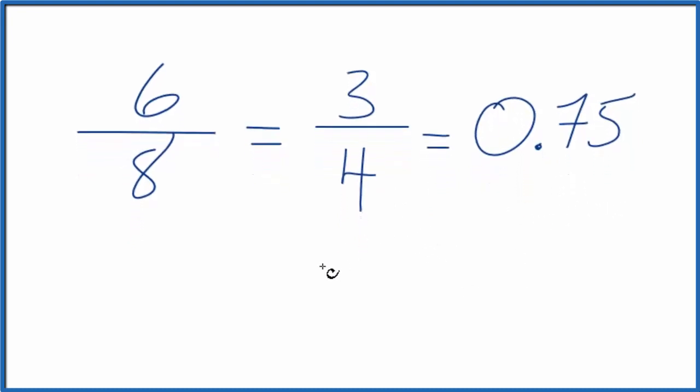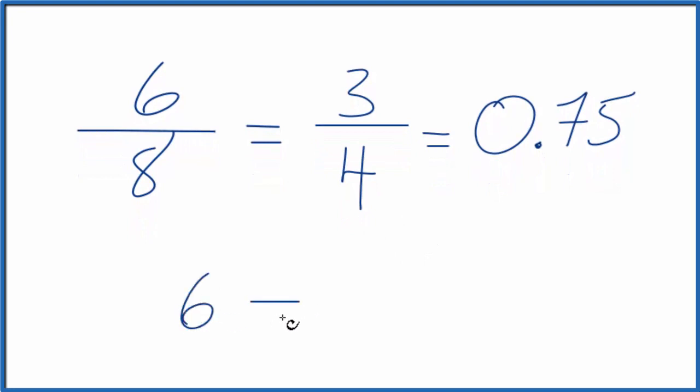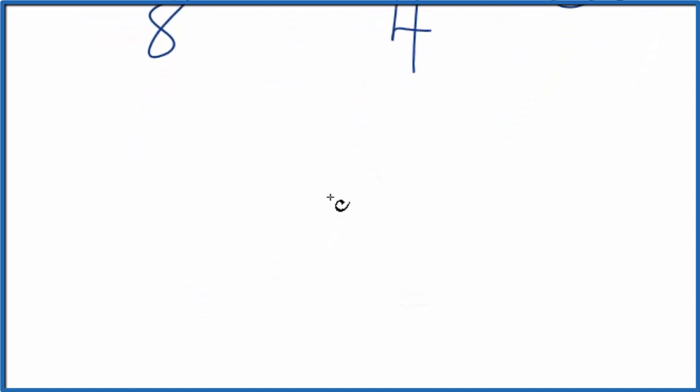We could also do this longhand. We could take 6 divided by 8 and figure out what fraction we get. Let's do that. So we have 6, and we want to know how many times does 8 go into 6. Well, it doesn't go into 6. Let's put 0 point, and then we could call this 60.